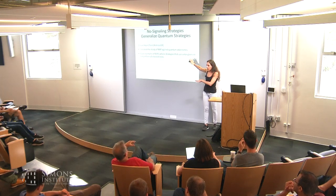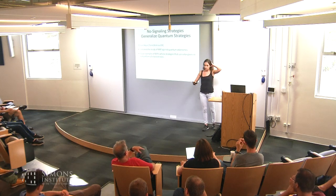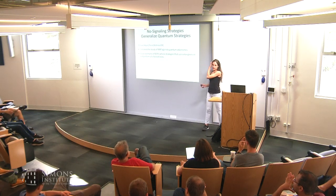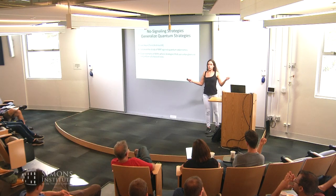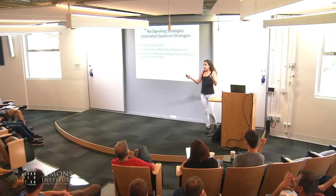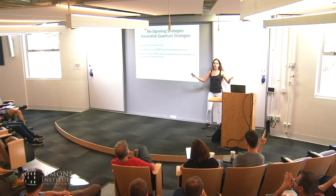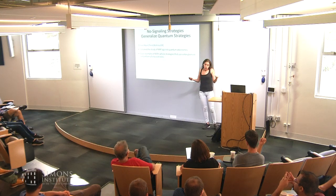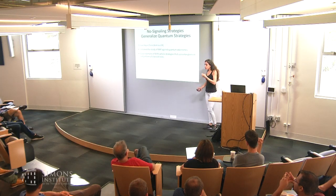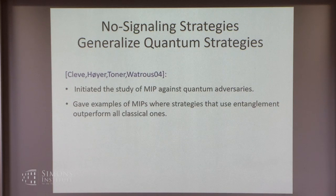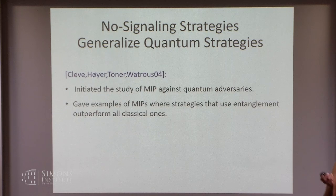What they showed is there are examples of MIPs for which quantum strategies outperform all classical strategies. And no-signaling strategies are a generalization of quantum strategies — if you are quantum, in particular you are no-signaling. No-signaling allows you to do whatever you want; the only restriction is that you can't transfer information. This is just a consequence of special relativity theory.